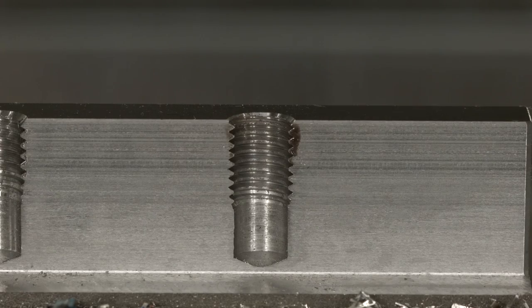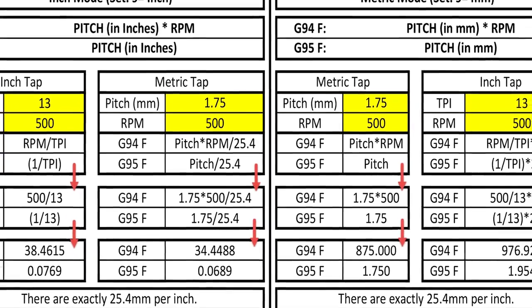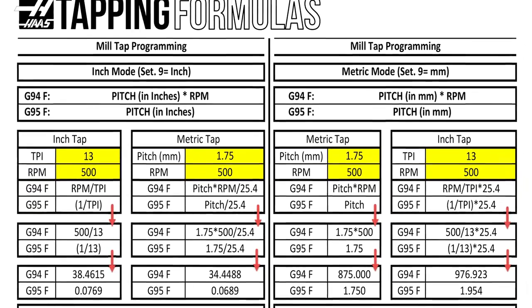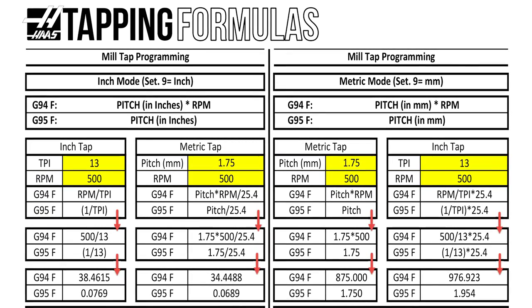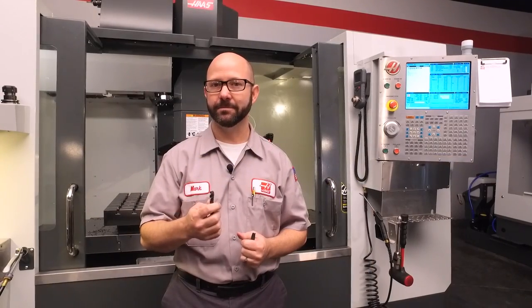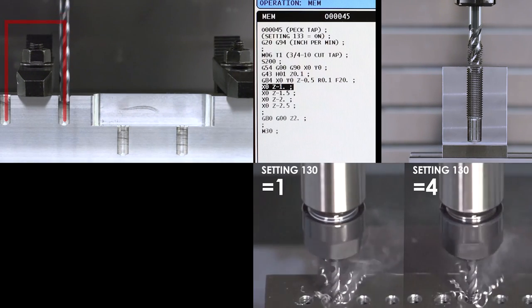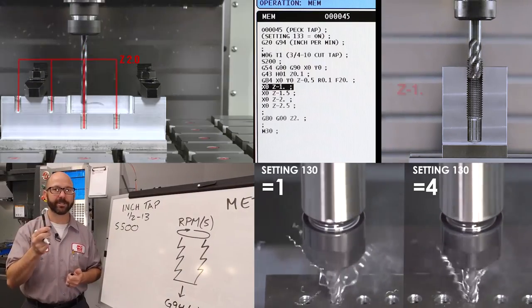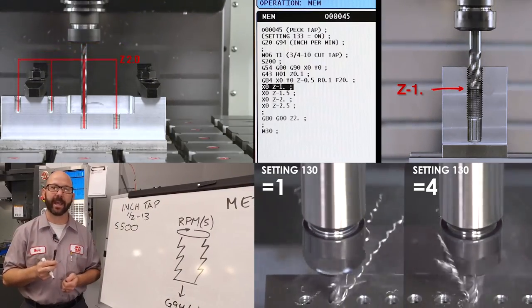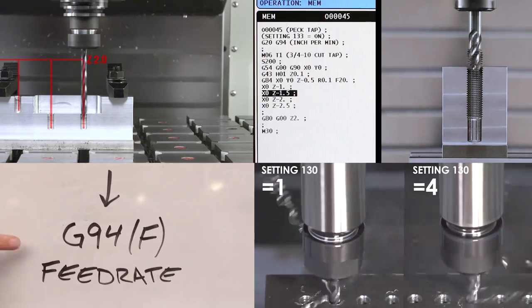Well, we've done it. We've programmed both a metric and an inch tap using our G84 canned cycle. Now, be sure to click on today's bonus content. We've created a tapping document that covers all the formulas we use today, as well as G95 feed per revolution tapping. We've also included links to videos that cover clearance planes, peck tapping, tapping faster with setting 130, and tapping on a machine that is set up in metric mode. Be sure to subscribe to these videos so you don't miss any of these tips as they're made. That's it, and thanks for watching this Haas Tip of the Day.